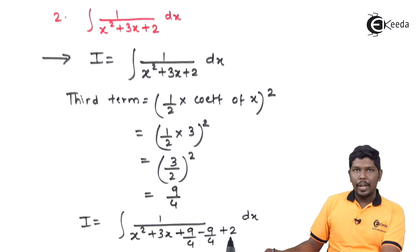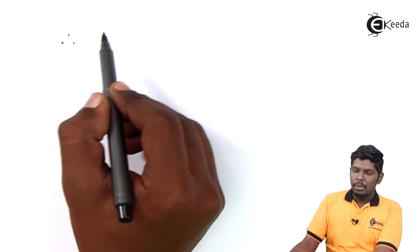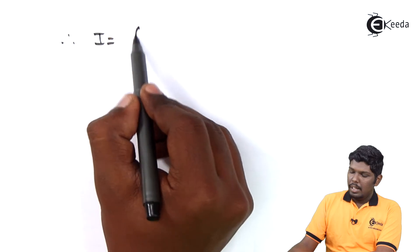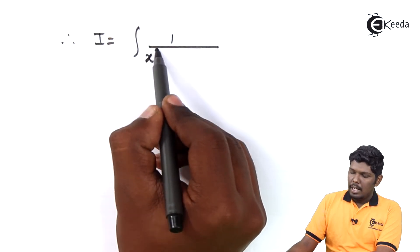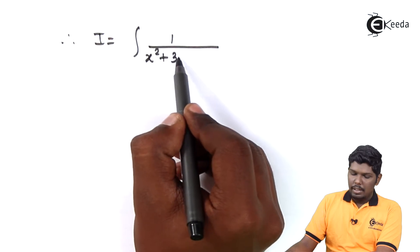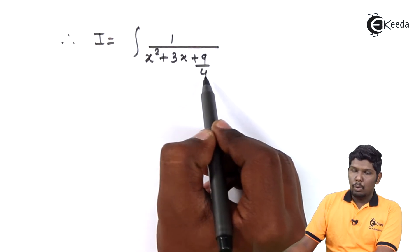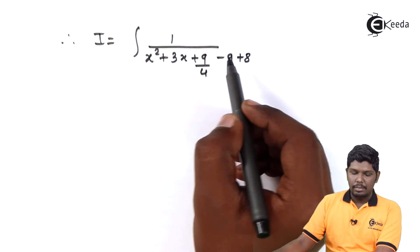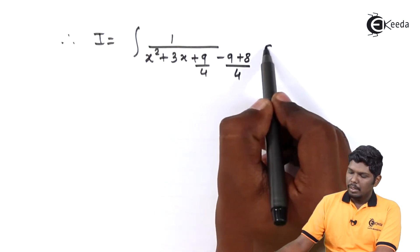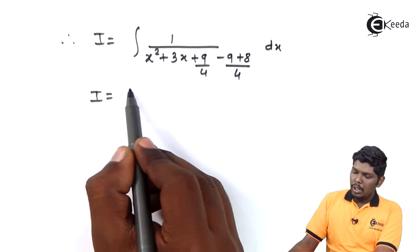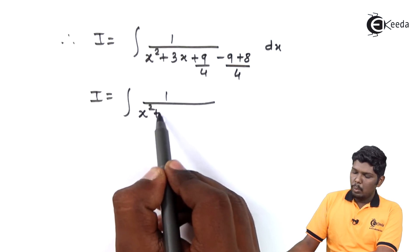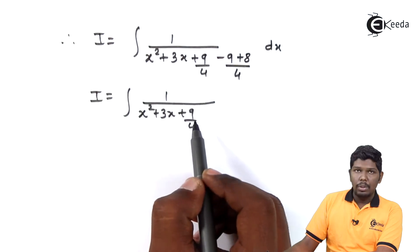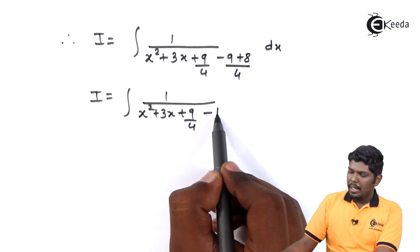In the next step we will solve these two fractions. As the denominator of 2 is 1, we will have minus 9 plus 8 upon 4 dx. Therefore, I is equal to integral 1 upon x² plus 3x plus 9 by 4. Further we have minus 9 plus 8 upon 4 dx. That is equal to 1 upon x² plus 3x plus 9 by 4 minus 9 plus 8 will give you minus 1 by 4.